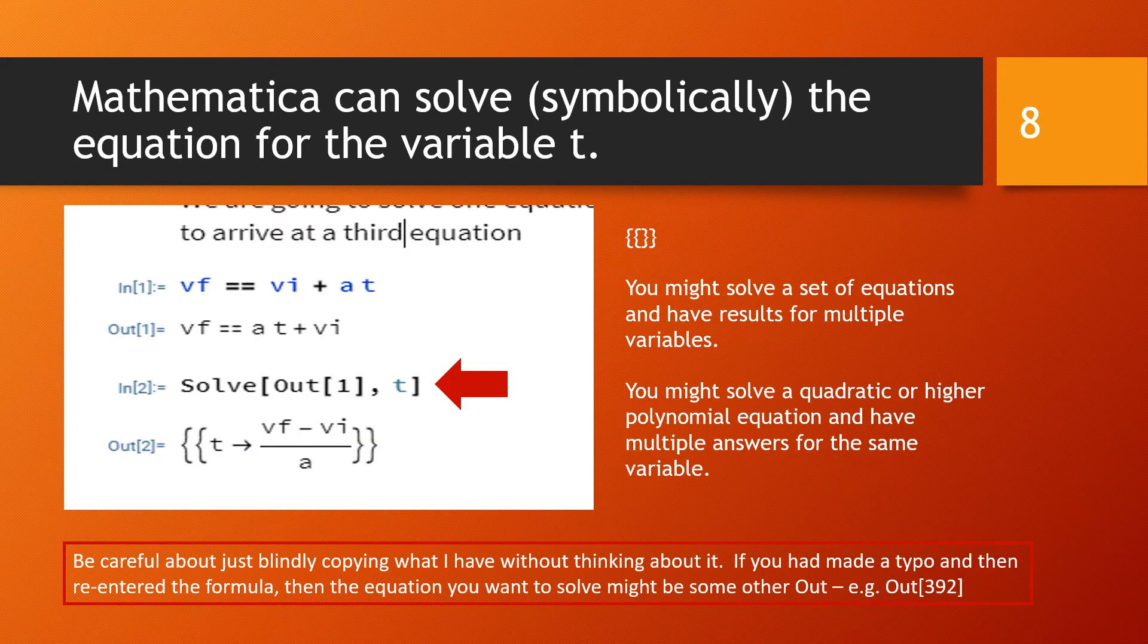With Mathematica we can solve this equation symbolically for any of the variables including t. So in the next cell we say Solve, capital S, square brackets, what we want to solve is the equation which is specified by Out[1] and we want to solve it for the variable t. So we have Solve capital S and it has open and closed square brackets, then the first argument is what we want to solve which is an equation Out[1], and then comma, and then what we want to solve for, we want to solve it for the variable t. Then shift enter and we enter that and we get the output 2 which is a solution for t, a symbolic solution.